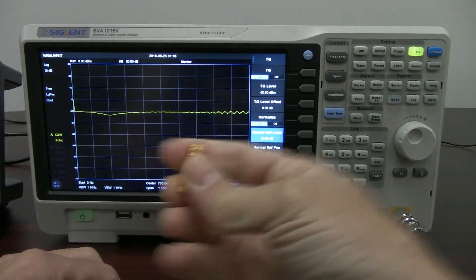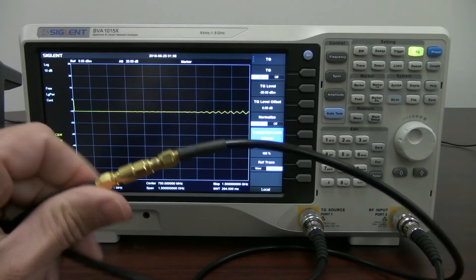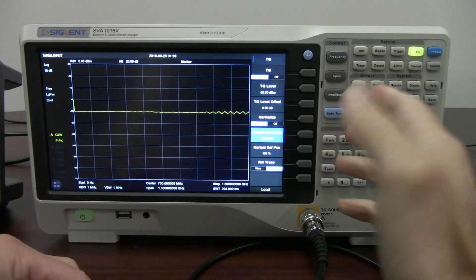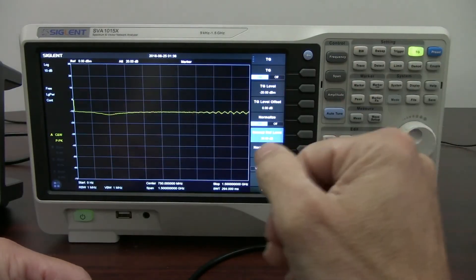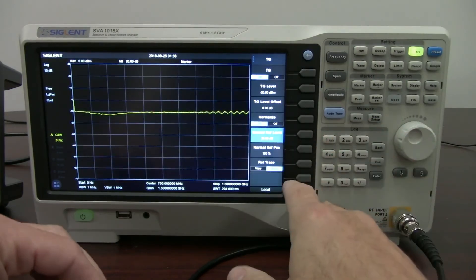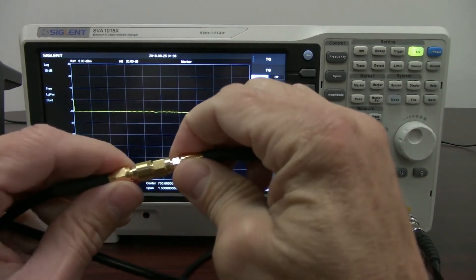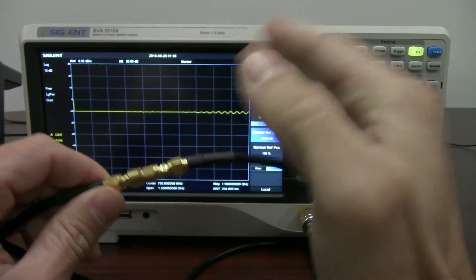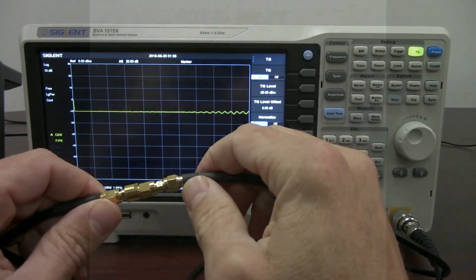This is the 20 dB attenuator, and now we've got the 10 dB attenuator. So using a spectrum analyzer with a tracking generator, or in this case our SVA with the tracking generator, we can take a closer look at our devices like attenuators, and we can make sure that they're operating correctly.